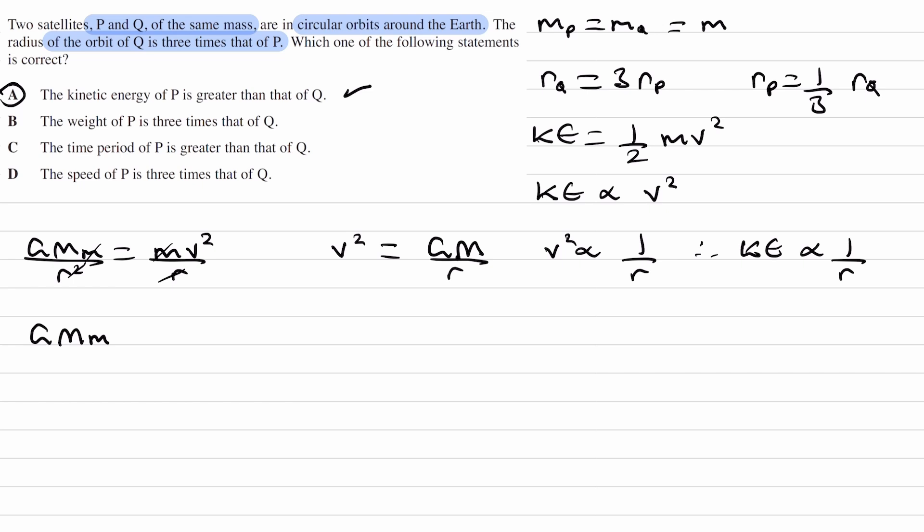Weight is just gravitational force. So gravitational force is GMm over R squared. This is the force. And the masses are both the same, so mass of the Earth, mass of the satellites are the same. G is a constant. So force is proportional to 1 over R squared.